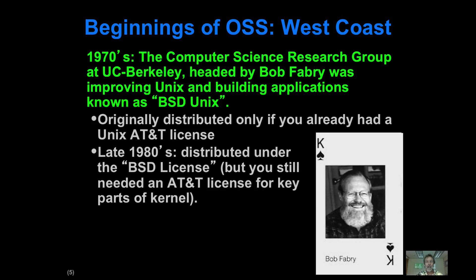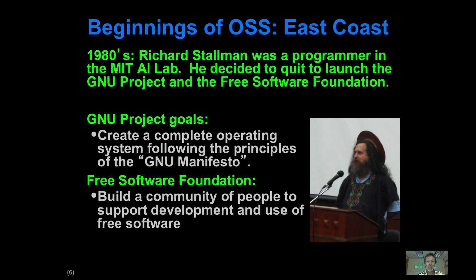So in the 70s, a guy named Bob Fabry was working on Unix and decided to create a new version of Unix called BSD, and created a license for it called the BSD license — although you still needed an AT&T license to actually make it work.